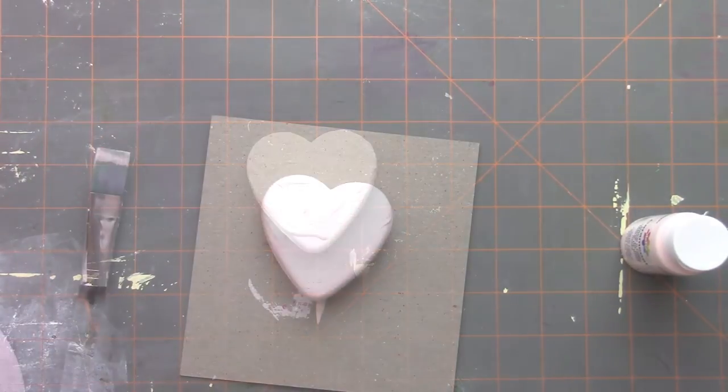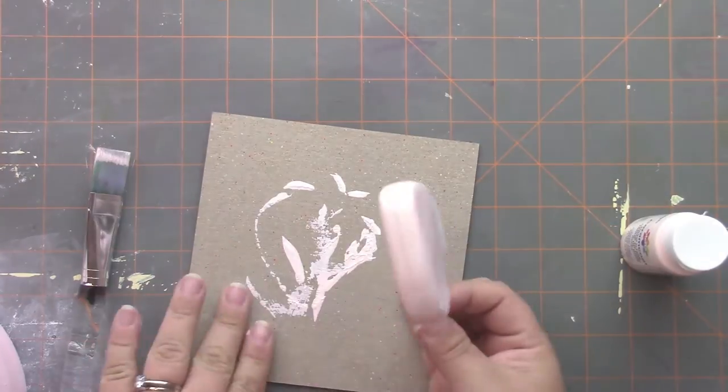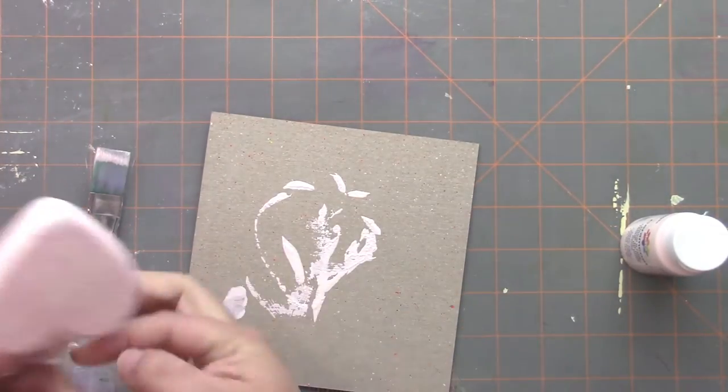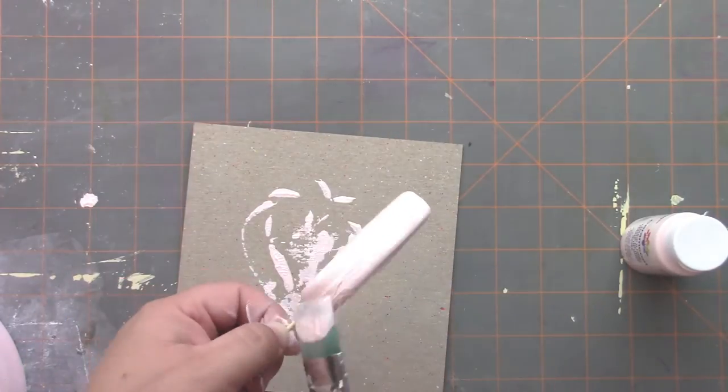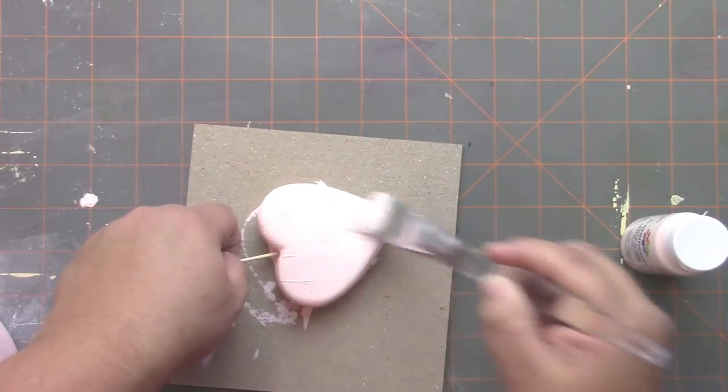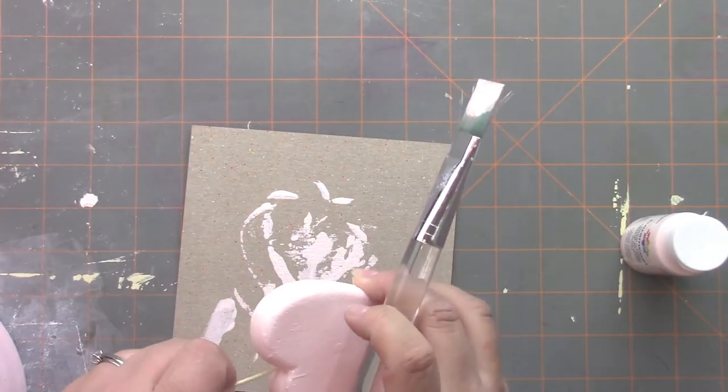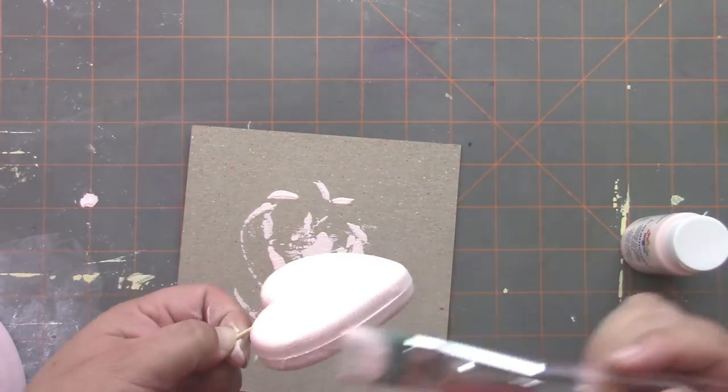You're going to paint your smooth foam heart with acrylic paint, and what I found is that if I stick a toothpick in the top where I'm going to be putting the eye pin, that helps to hold onto the heart a little bit better while painting.